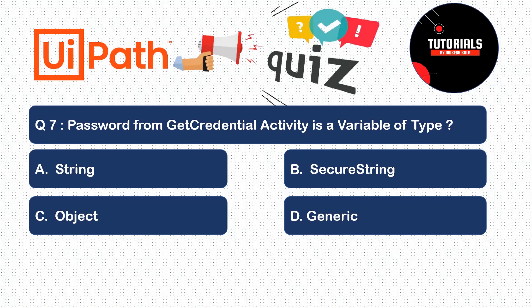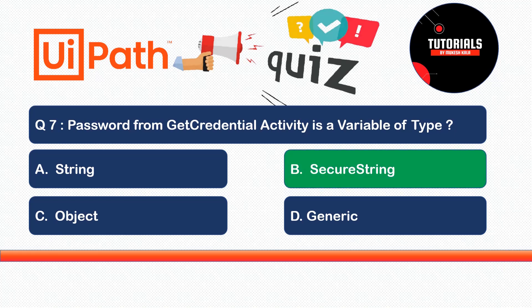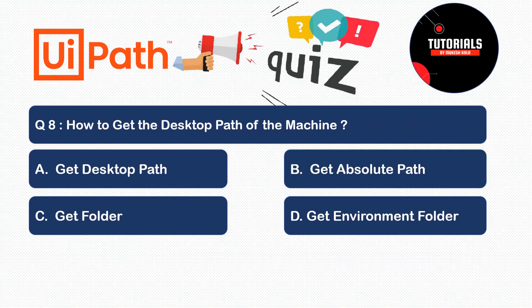Question 7: The password from the Get Credential activity is stored in a variable of what type? Options: A) String, B) Secure String, C) Object, or D) Generic. The correct answer is Secure String. When using Get Credential, the username and password are returned as Secure String variables, meaning the password is encrypted.